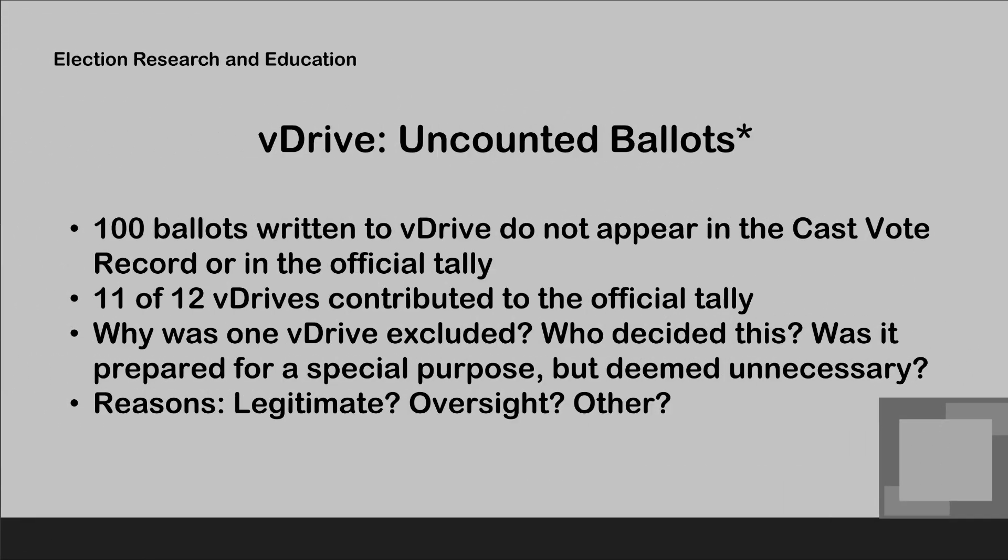Now we'll go to the V-drive uncounted ballots. It is my expectation that when I see a V-drive written to by Verity Central, it will end up in Verity Count. We have 100 ballots written to a V-drive that do not appear in the cast vote record — the entire amount of ballots written to that V-drive. Eleven of the twelve V-drives did contribute to everything in the official tally. So why was one drive excluded? Who decided this? Was it prepared for a special purpose but deemed unnecessary? It could be a legitimate reason, an oversight, or something else.